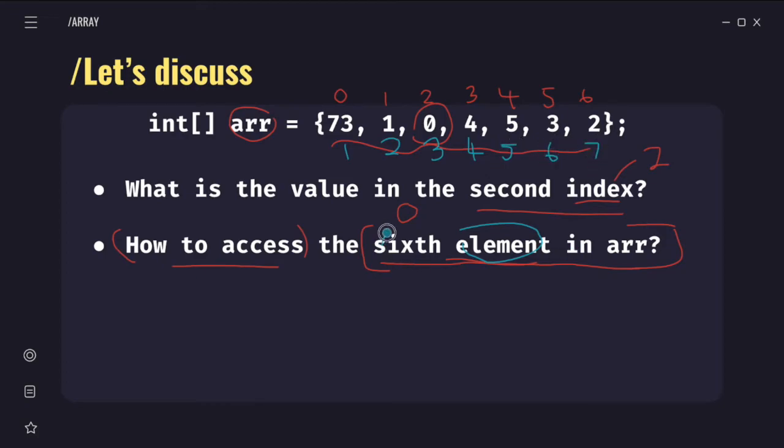So the sixth element is three. However, we still haven't answered the question yet. The question asks how to access. So what is the answer? What was our array? Arr, right? So arr. Our element was the six element in arr. So when we look at the sixth element of arr - the blue number 6 here - that is three, and it's in index number 5.